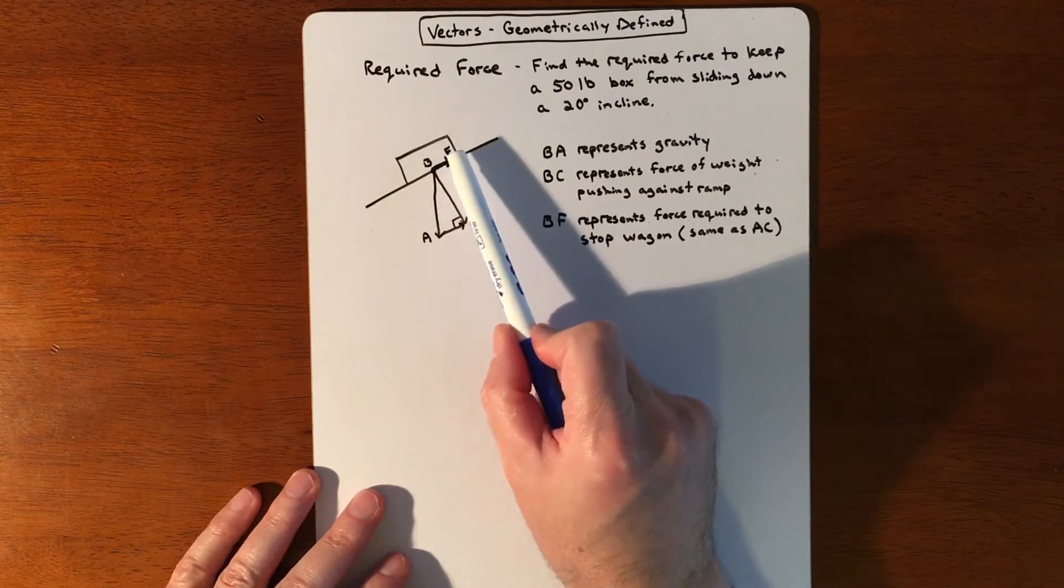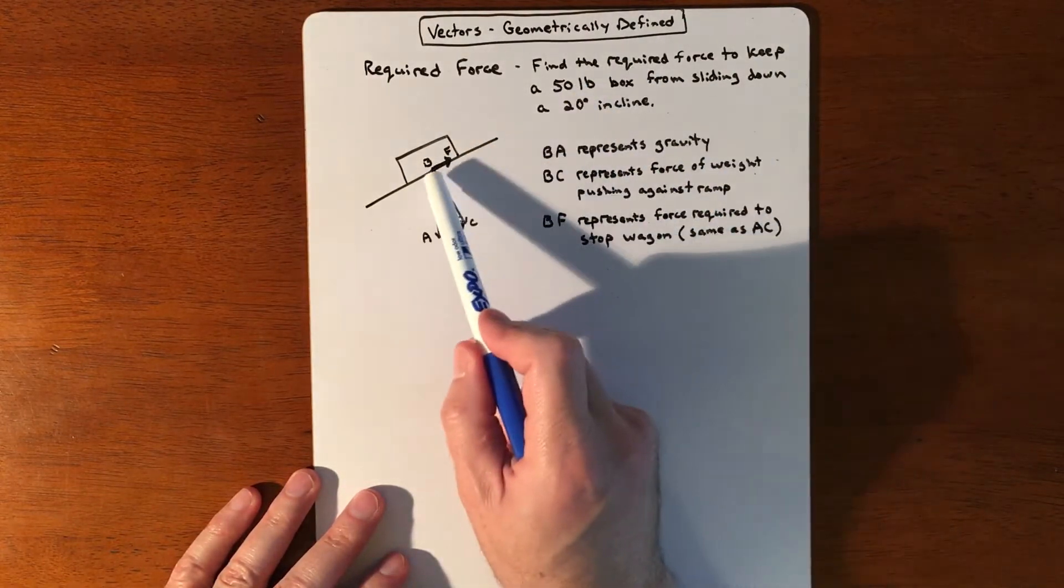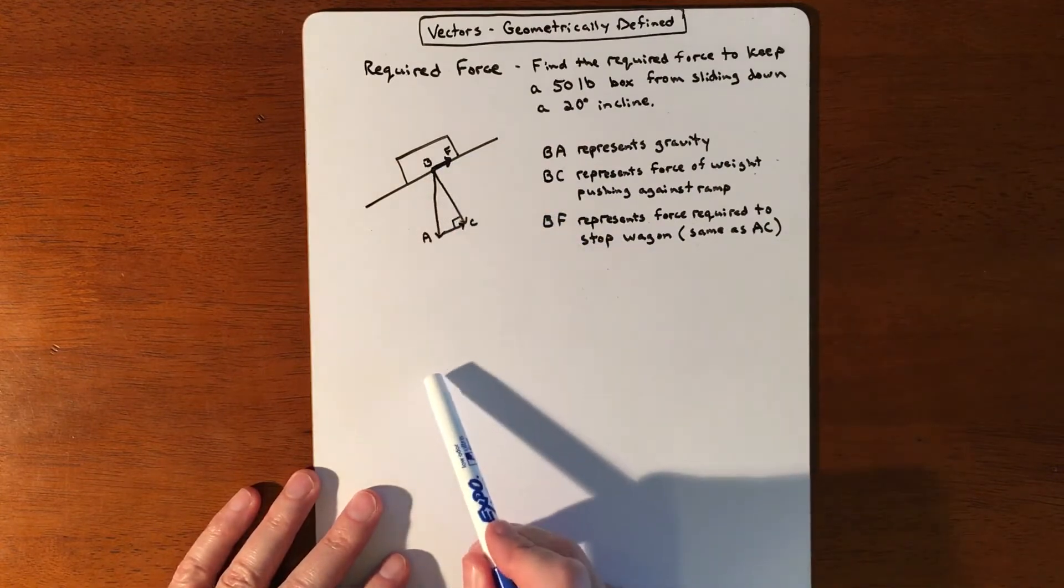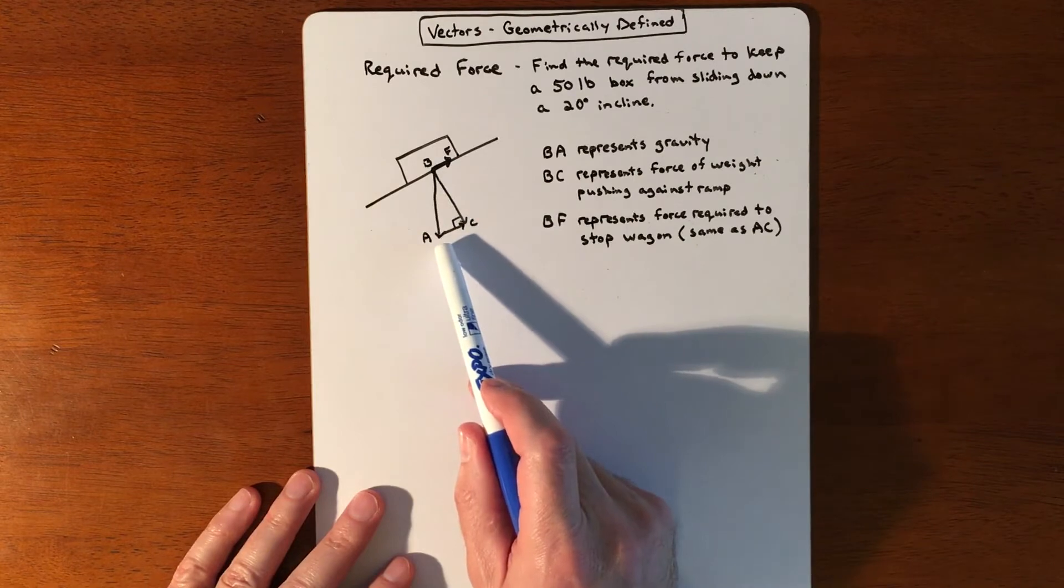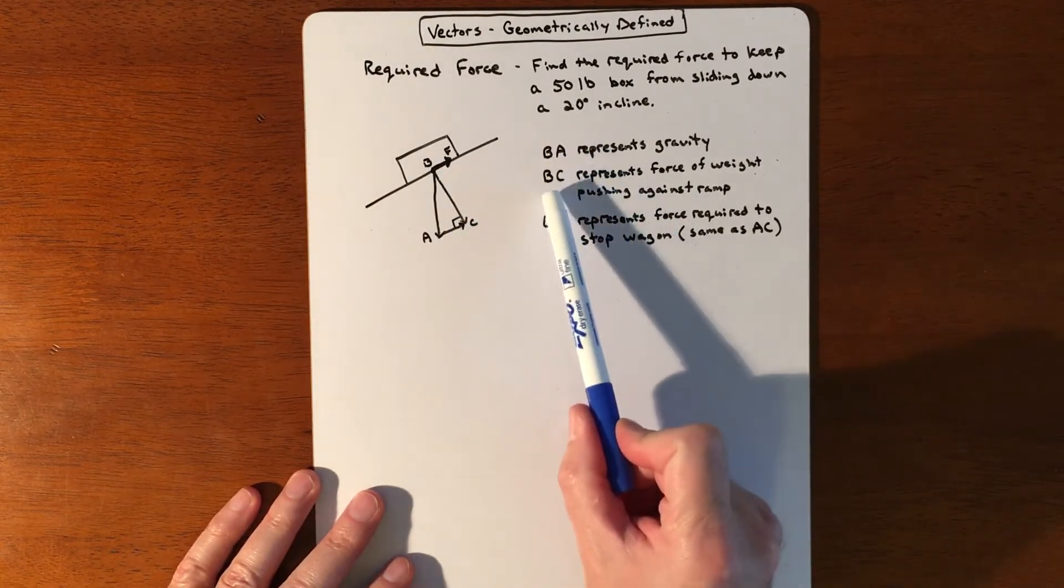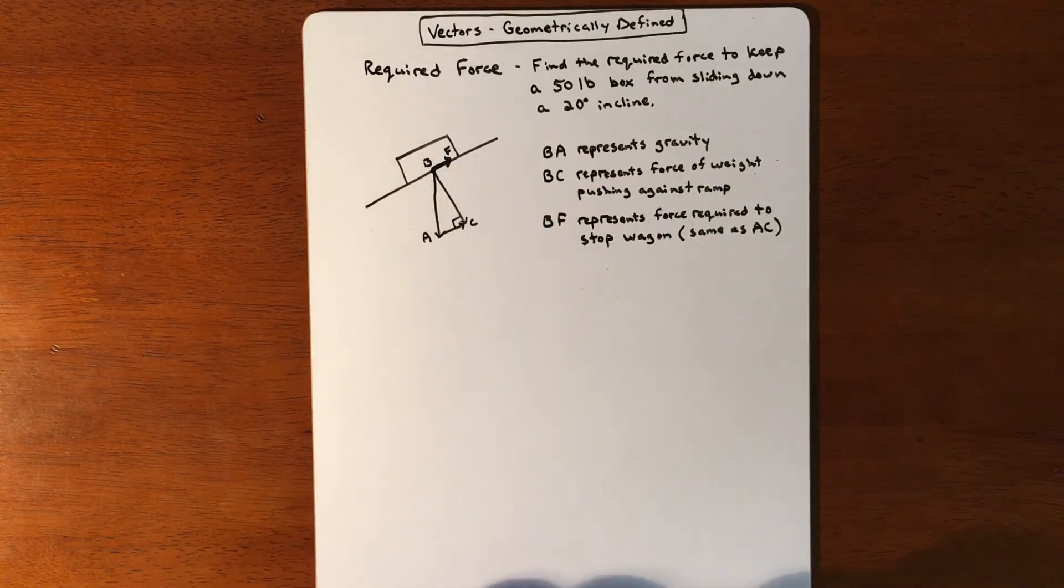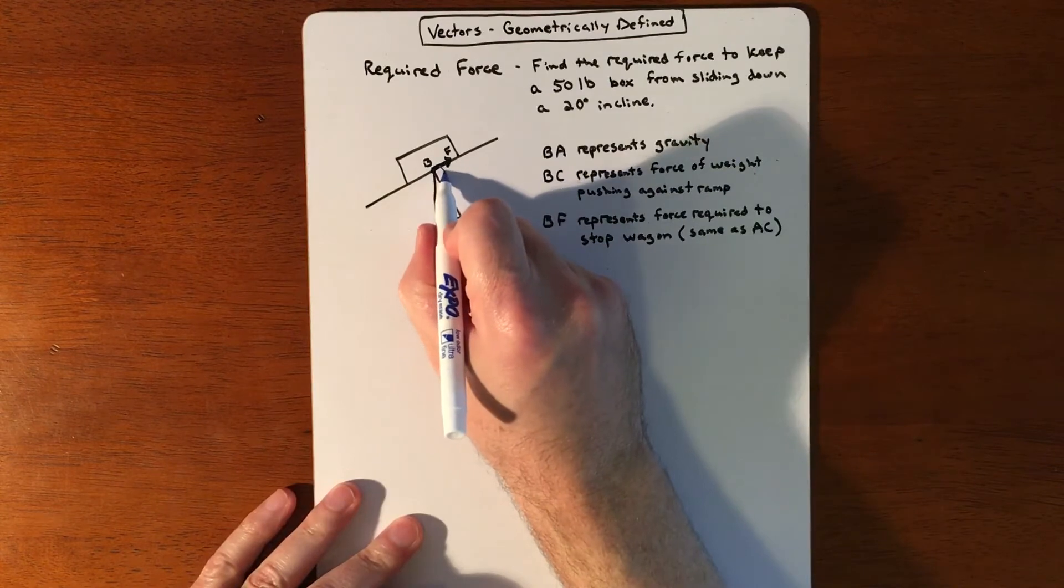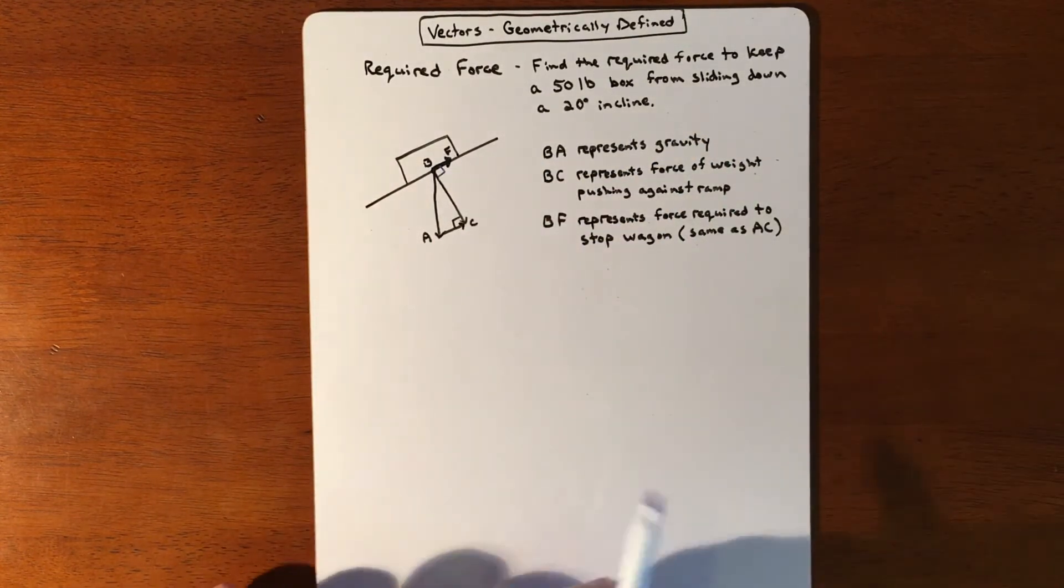You have a 50-pound box with gravity pulling directly down into the center of the Earth—that's what BA represents. BC represents the force of the weight pushing against the ramp, which is perpendicular to the ramp.